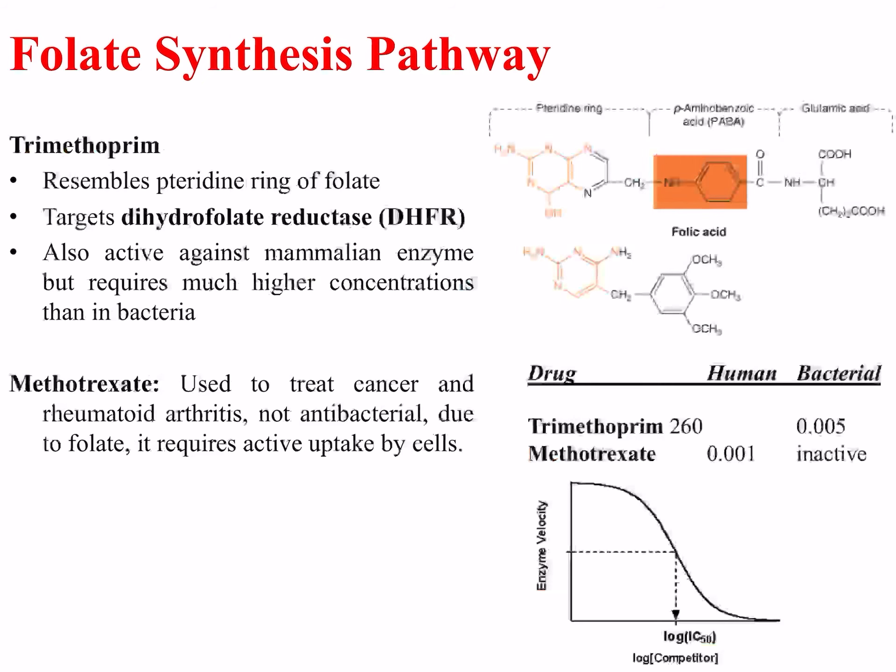Similarly, DHFR inhibitors such as trimethoprim resemble the pteridine ring of folate, as shown in the diagram on the right. It mainly targets dihydrofolate reductase but is also active against mammalian enzymes, though it requires much higher concentrations than in bacteria. As indicated in the table showing IC50 values, trimethoprim is very active against bacterial enzymes but not the human version.